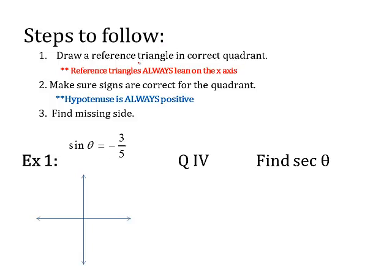Steps to follow. The first thing you're going to do is draw a reference triangle in the correct quadrant. The problem is going to tell you which quadrant to go in. When you draw a reference triangle, it is a corner of a bow tie, if you will. So here's my bow tie — it's got four corners, and it centers at the origin.